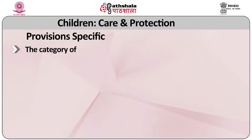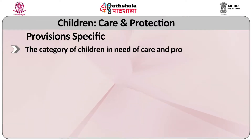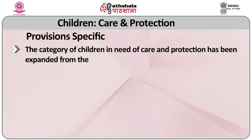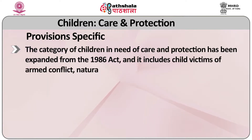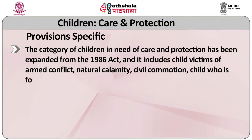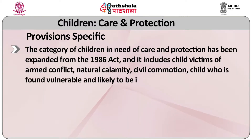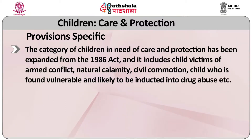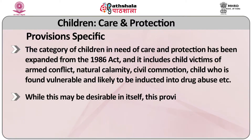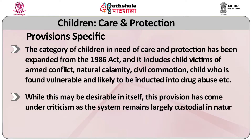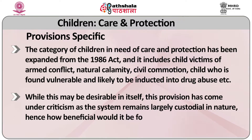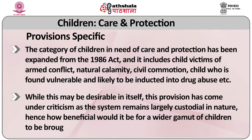Now let me highlight provisions specific to children in need of care and protection in the 2000 Act. Firstly, the category of children in need of care and protection has been expanded vastly from the 1986 Act. It included child victims of armed conflict, natural calamity, civil commotion, children found vulnerable and likely to be inducted into drug abuse, etc. While this expansion may be desirable in itself, this provision has come under criticism as the system remains largely custodial in nature. Hence, how beneficial would it be for a wider gamut of children to be brought under the law? Many have questioned this.